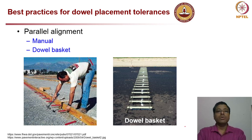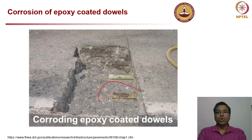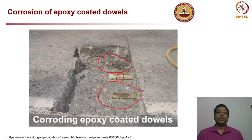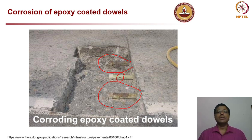Parallel alignment of dowel bars is essential and can be achieved either manually or by using a dowel basket, which is an automatic system ensuring all dowels are placed in parallel. One photograph shows severe corrosion of a dowel bar, even in an epoxy-coated system with a protective cap. The corrosion occurred because the epoxy coating is abraded by concrete during repeated expansion and contraction cycles.